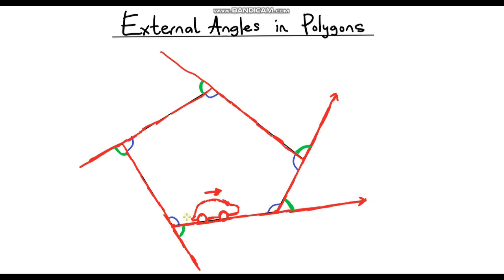Well these lines that I've drawn, they are straight lines, and every time we get to a point we know that angles on a straight line at a point always sum to 180 degrees. So what we can say is that internal angles and external angles always sum to 180 degrees. It doesn't matter what shape.